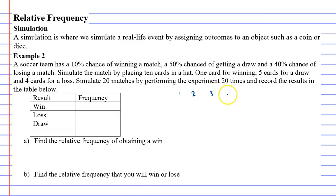1, 2, 3, 4, 5, 6, 7, 8, 9, 10. We've got a 10% chance of winning, so we'll assign one of the numbers as a win. 50% chance of getting a draw, so we need five draws from this. And a 40% chance of losing, so we need four to represent our losses.